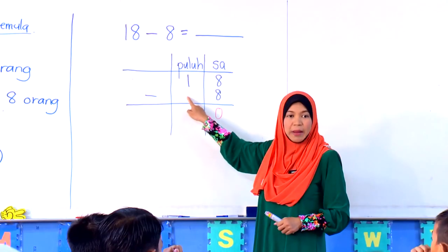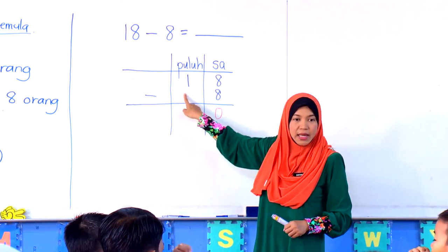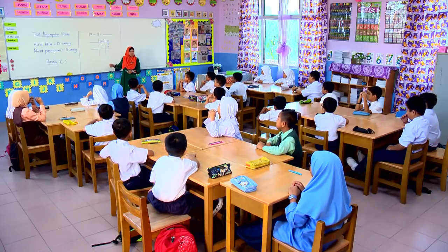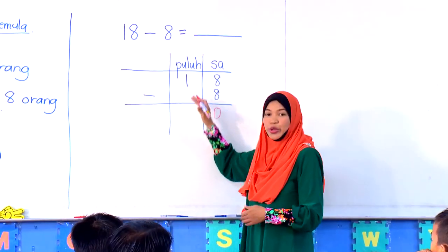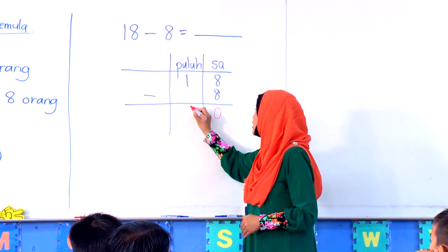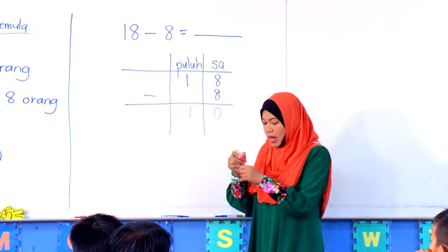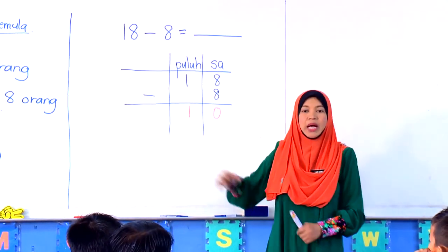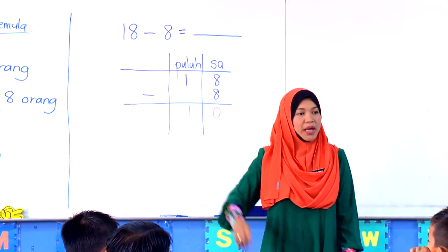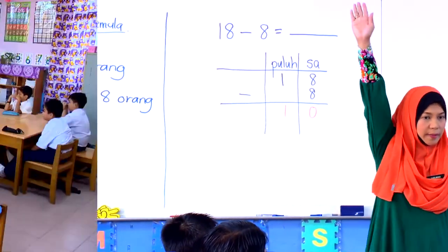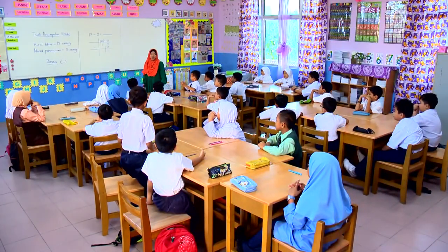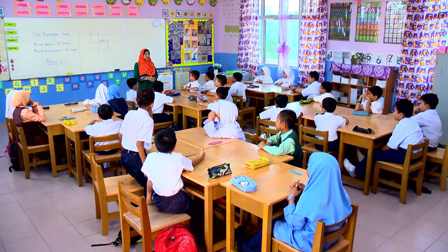Ada 1. Ada tolak dengan apa-apa nilai tak? Kalau tak ada, apa kita nak buat? Kita turunkan sahaja. Maka berapakah beza antara pelajar lelaki dan pelajar perempuan? 10. Okey, terima kasih Amir.